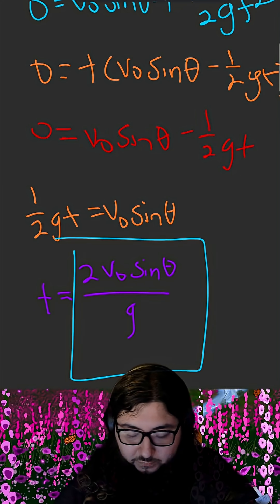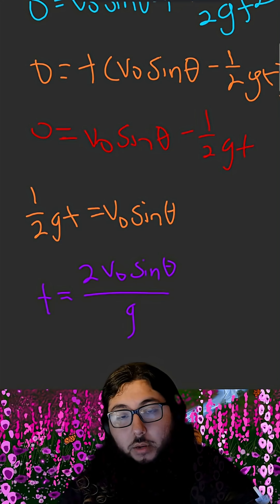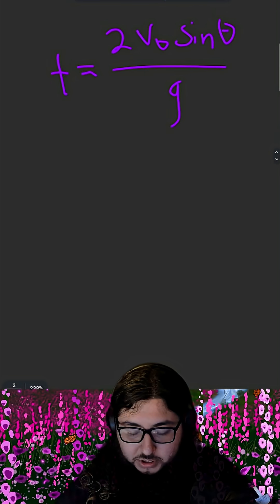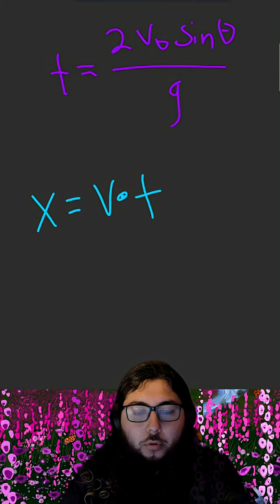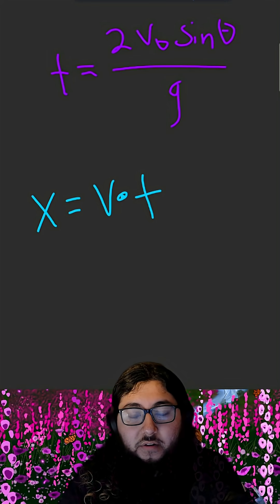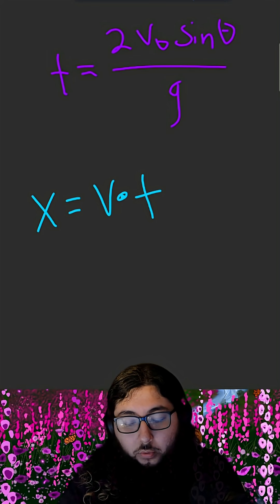Our next step is to plug this expression for time in another equation. That way, we can solve for distance. That equation is simply going to be x is equal to v times t. That distance is equal to velocity times time. And this is applicable because horizontal velocity is unaffected by gravity, and we're ignoring drag.